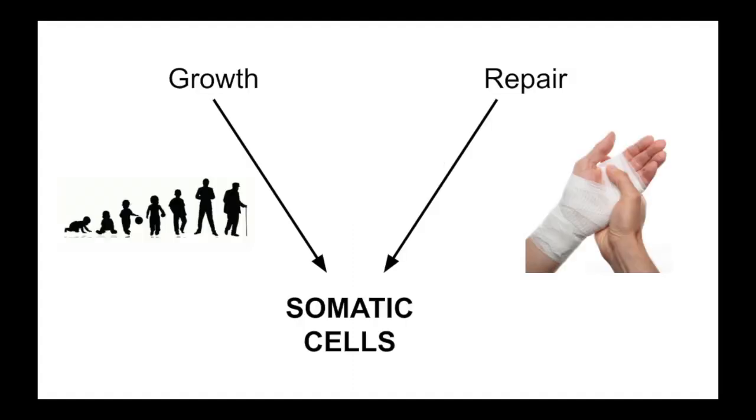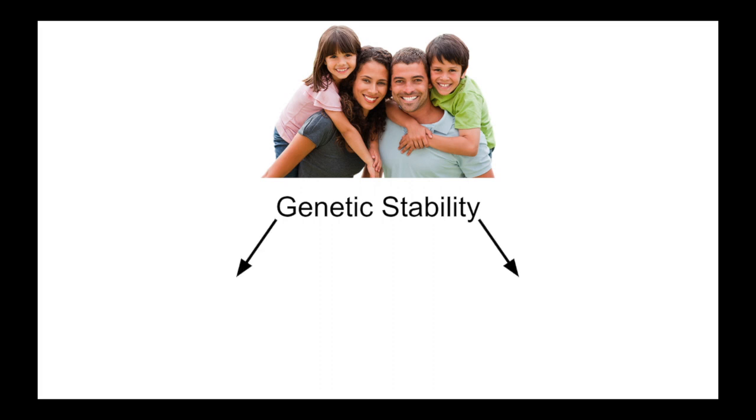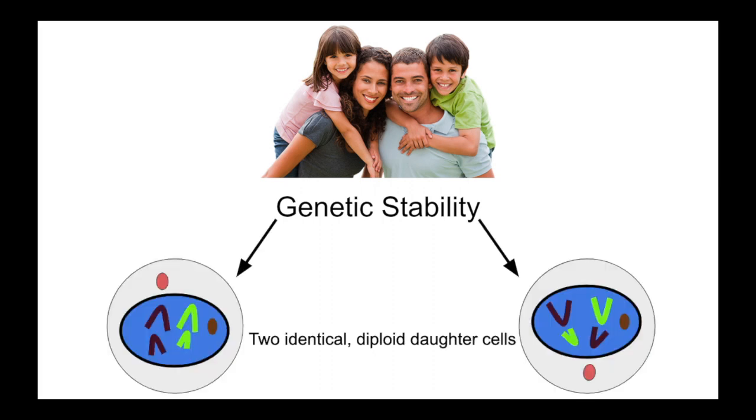Mitosis is the process of cell division for the growth and repair of an organism through the production of somatic cells. Genetic stability is promoted in mitosis through the production of two identical diploid daughter cells.